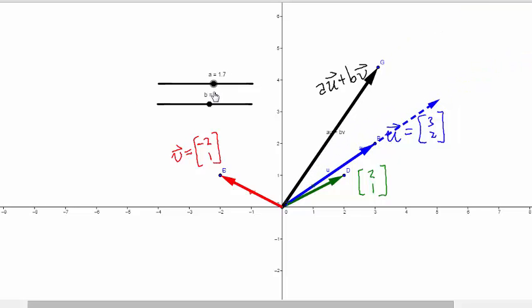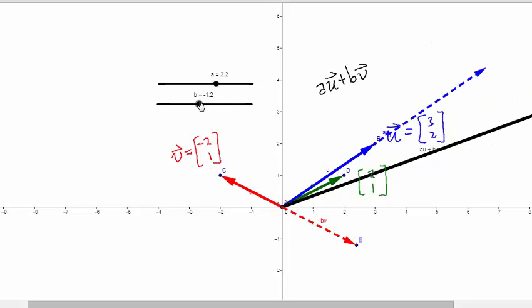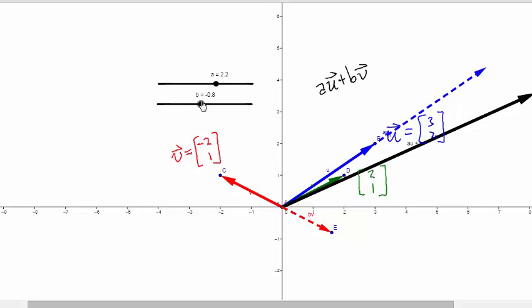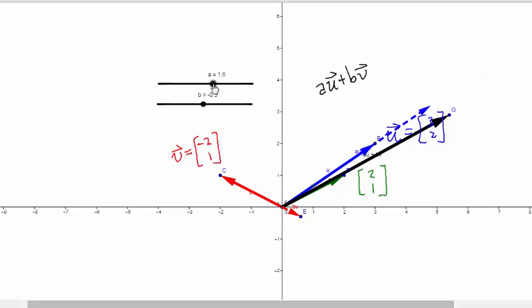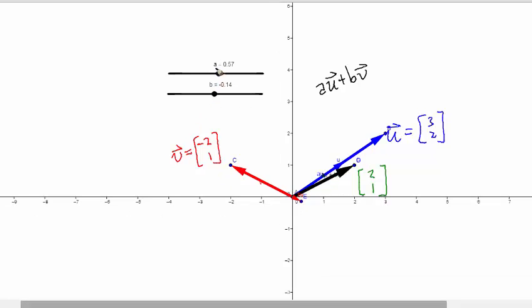So, can I find values for a and b so that that black vector matches the green vector? Well, maybe it's not so easy. Maybe something like this. Well, it seems to be getting a little bit closer there. In fact, for these particular values of a and b, I see that this black vector here does indeed equal the green vector.